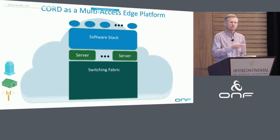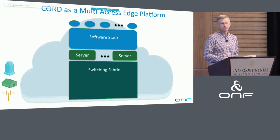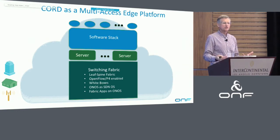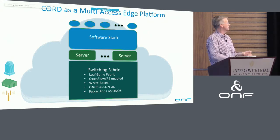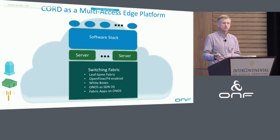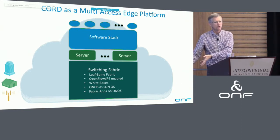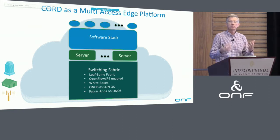We're thinking of CORD — which we've been working on for two years now — as a multi-access edge platform. If you stood back from it and looked at it that way, it has a switching fabric, a software stack, and a set of servers. We are going to populate the switching fabric with LeafSpine — it's going to have OpenFlow and P4-enabled switches, white boxes, ONOS-controlled, and it's going to have the Trellis subsystem. Here's an example: you take a subsystem that's a component, load it in — that component is built from other components like ONOS — and that becomes a component in the CORD exemplar platform.